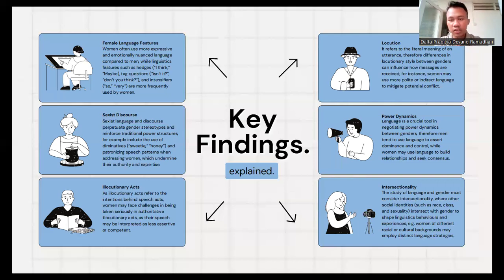Thirdly is illocutionary acts. Illocutionary acts refer to the intentions behind speech acts. Women may face challenges in being taken seriously in authoritative illocutionary acts as their speech may be interpreted as less assertive or competent. And then fourth is locution, which refers to literal meaning. Differences in locutionary style between genders can influence how messages are received. For instance, women may use more polite and indirect language to mitigate potential conflict.